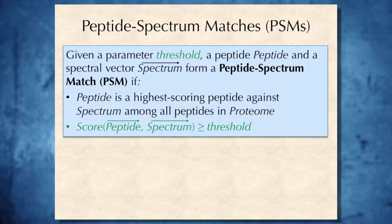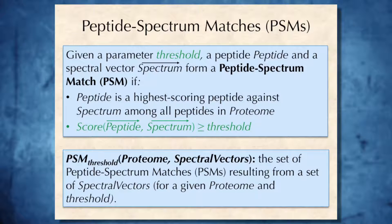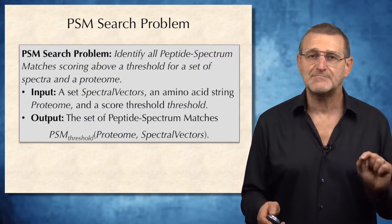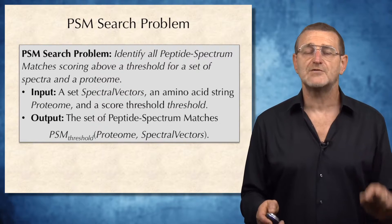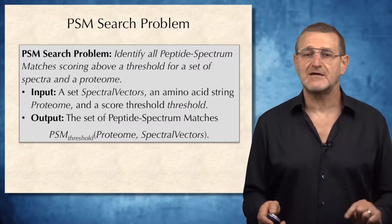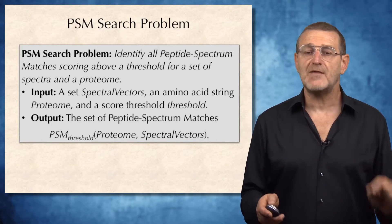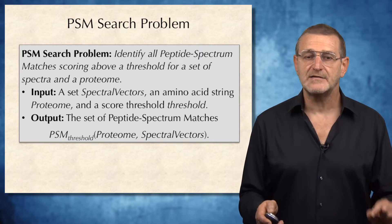In addition, we will require that the score between the peptide and spectrum is larger than or equal to the threshold. After we define the notion of PSM, we define the set of PSMs derived from a proteome and spectral vector under a given threshold as the set of all peptide-spectrum matches resulting from a set of spectral vectors for a given proteome and a given threshold. Our PSM search problem is to identify all peptide-spectrum matches scoring above a threshold for a set of spectra and a proteome. The input is a set of spectral vectors, an amino acid string proteome, and a score threshold. The output is the set of peptide-spectrum matches defined for the proteome, spectral vectors, and parameter threshold.